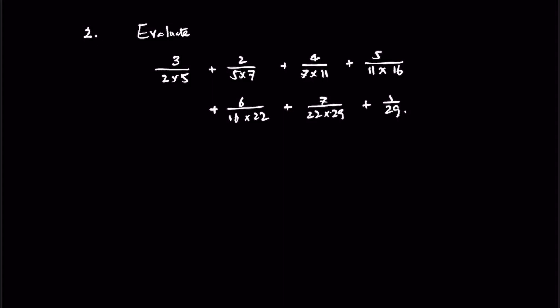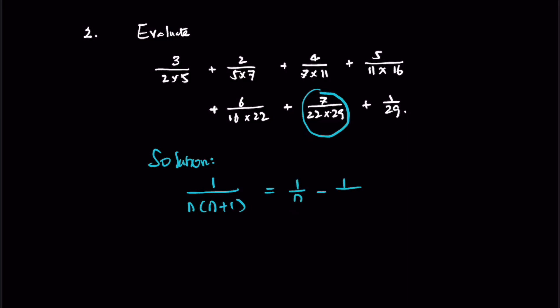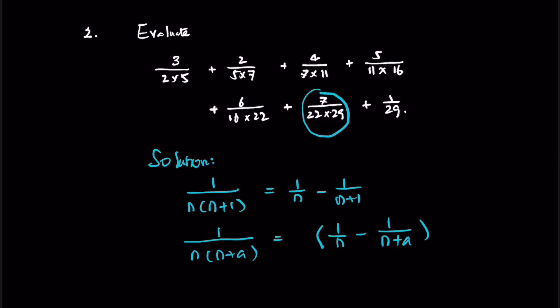Number two: evaluate 3/(2×5) + 2/(5×7) + … + 7/(22×29) + 1/29. We recall the partial fraction method. If we have n × (n+1) consecutive numbers, we get 1/n − 1/(n+1). If we have n × (n+a) where a > 1, we get 1/(n) − 1/(n+a), but this will not give a unit fraction result.